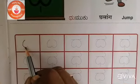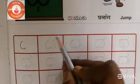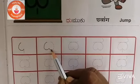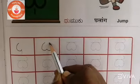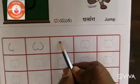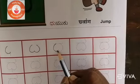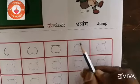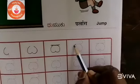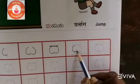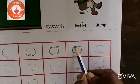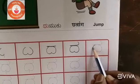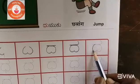First step. Second step. We are writing the Vyanjana Dha. Third step. This is Dha. This is Dha. This is the complete letter Dha.